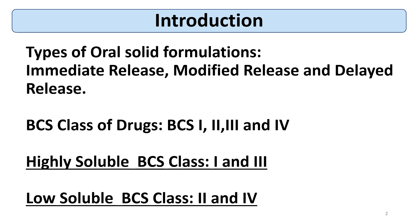Drugs are mainly of 4 BCS types: BCS 1, 2, 3, and 4. BCS class 1 and 3 drugs are highly soluble, while BCS class 2 and 4 are low-soluble drugs. Dissolution takes into consideration both the solubility of the drug and the formulation design.